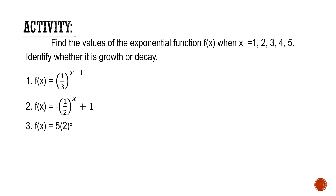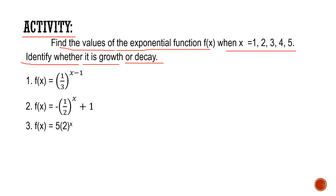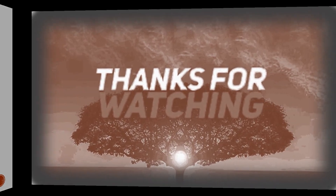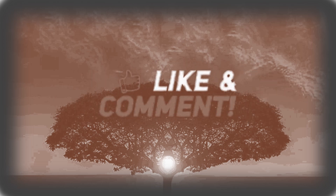For your activity: find the values of the exponential function f of x when x is equal to 1, 2, 3, 4, 5, and identify whether it is a growth or decay. By simply using your Cartesian plane, you can visualize if this function is an exponential growth or decay — it depends on whether when x increases, your y also increases (increasing function) or decreases (exponential decay). Put your answers and solutions in your blue notebook. Thanks for watching — please do like, comment, and subscribe.